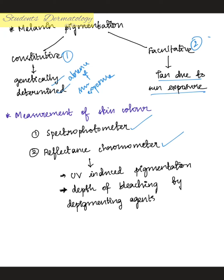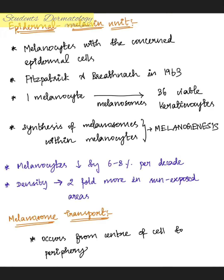The reflectance chromometer is also used to measure UV-induced pigmentation and to determine the depth of bleaching caused by depigmenting agents. The epidermal melanin unit — first denoted by Fitzpatrick and Breathnach in 1963 — is the melanocyte with its concerned epidermal cells; one melanocyte supplies melanosomes to 36 viable keratinocytes. The synthesis of melanosomes within the melanocytes is called melanogenesis.